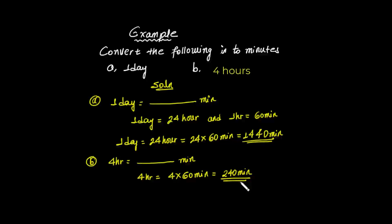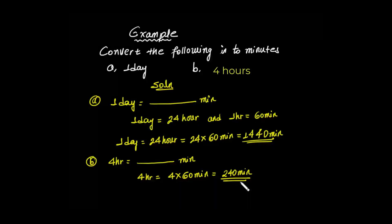4 hours is equal to 240 minutes. We can now see the units of time line and precision in measurement.